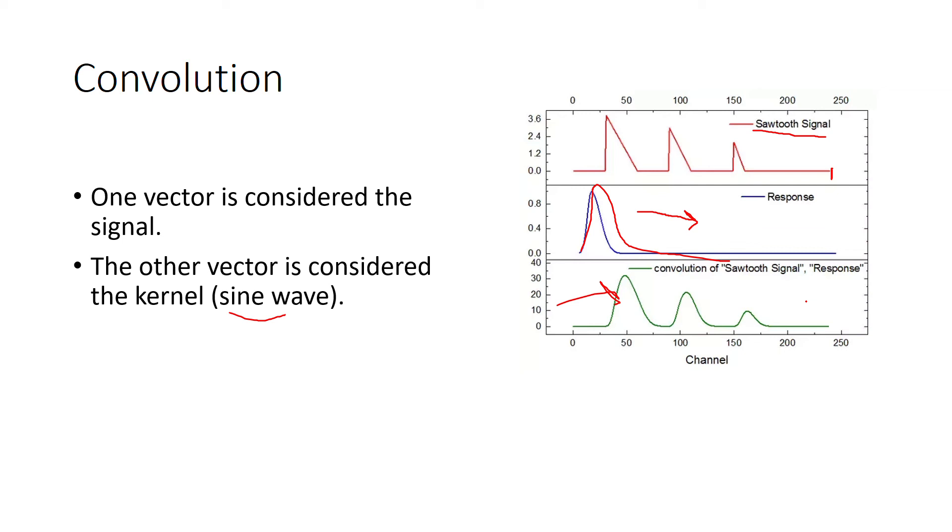Convolution actually begins with the kernel aligned to the left, as you can see here. When written in equations, convolution is often denoted using the asterisk. For instance, this equation shows y equals x convolved, which is the asterisk, with h.